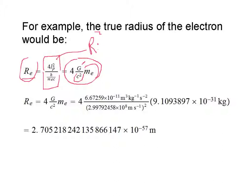We can plug in our values, mass of the electron being here, and we find that R sub e, the radius of the electron, is equal to approximately 2.7 times 10 to the minus 57 meters.